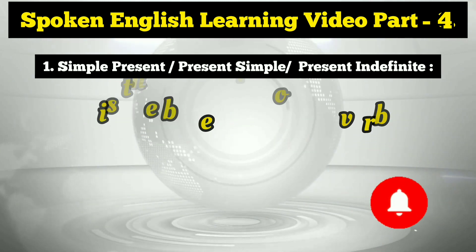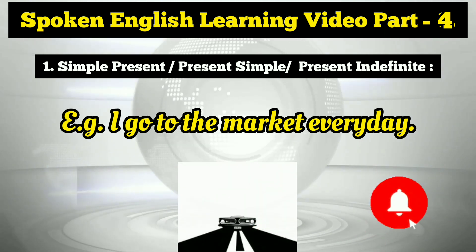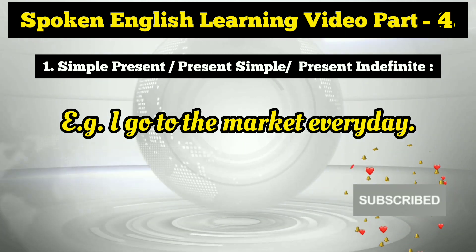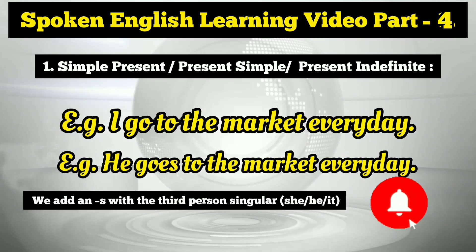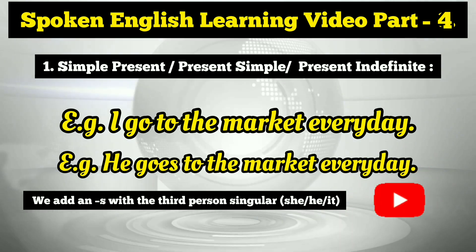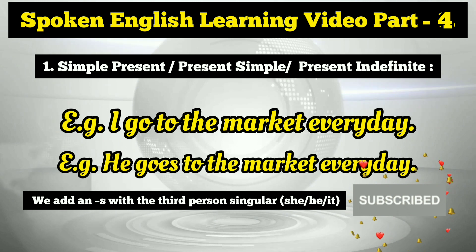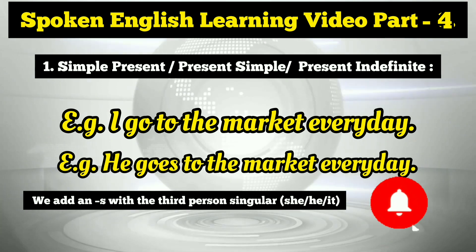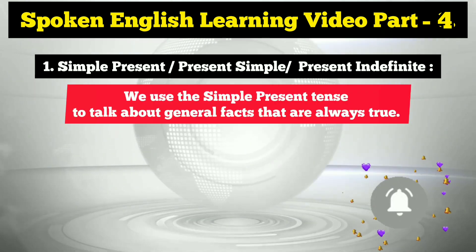Let me show you the first example: 'I go to the market every day.' Here I am using the base form of the verb 'go' without changing it — for first person we use 'go.' The second example is: 'He goes to the market every day.' In case of third person singular number — he, she, or it — we must add an 's', so it becomes 'goes.'